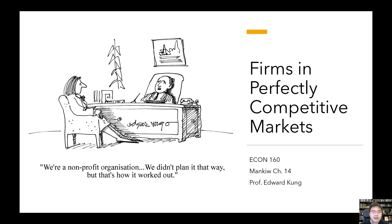In the first half of the lecture, we studied how individual firms make decisions in a perfectly competitive market. Today, we're going to study how the collective decisions of lots of individual firms translates to market-level outcomes, and we're also going to study what happens to the market in the long run as firms start to enter or exit the market.